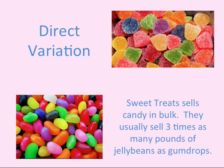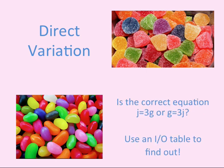If we think about writing an equation to match this situation where G is equal to the number of pounds of gumdrops sold and J is equal to the number of pounds of jelly beans sold, most students will come up with either J equals three times G or G equals three times J.